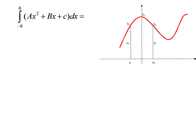So let's just think, in general, because we know calculus, how we would integrate. Well, the antiderivative here would be a over 3 x cubed plus b over 2 x squared plus cx. And we're going to evaluate at h and negative h.